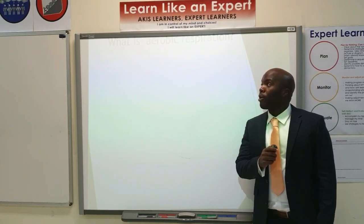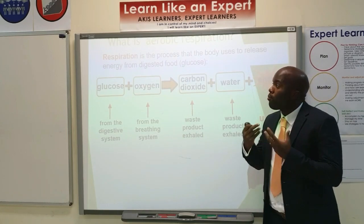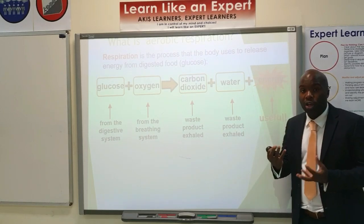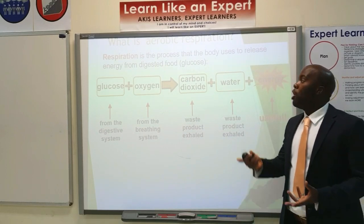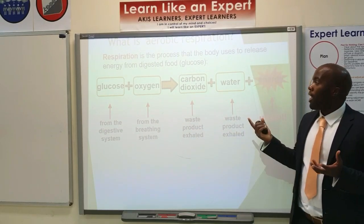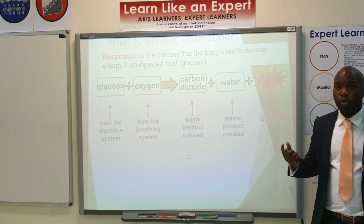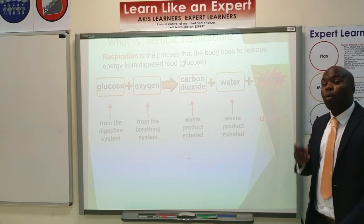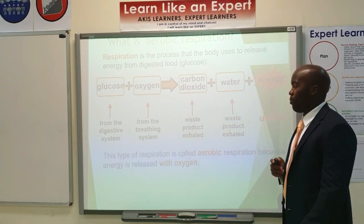Aerobic respiration is the process of our body using glucose and oxygen to produce energy. The glucose comes from your digestive system and the oxygen comes from your respiratory system. Carbon dioxide and water are produced as byproducts, and most importantly energy is produced. We get quite a lot of energy from aerobic respiration.